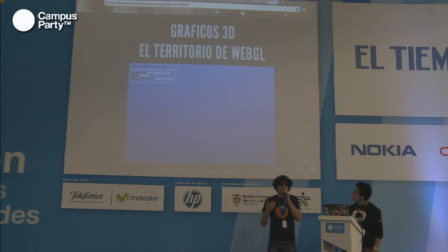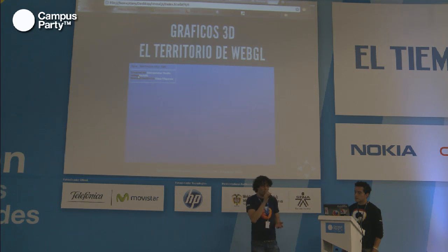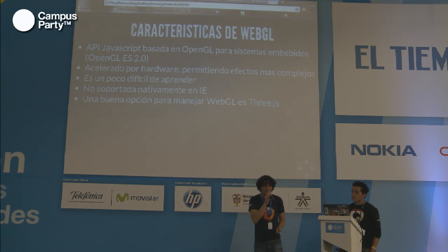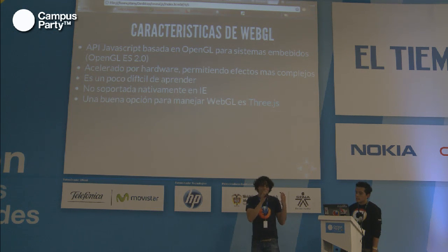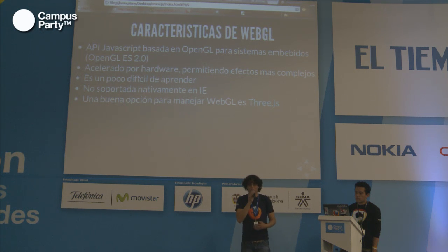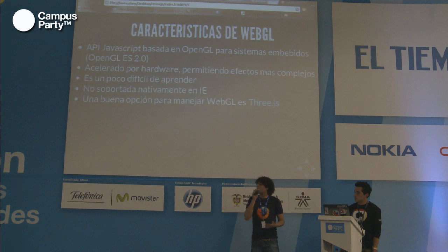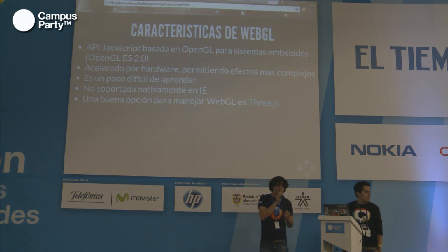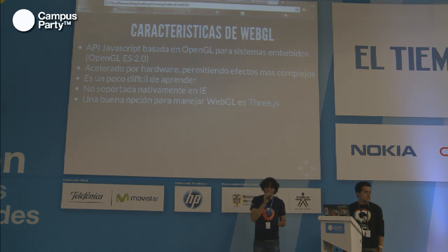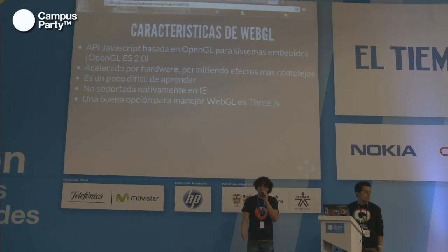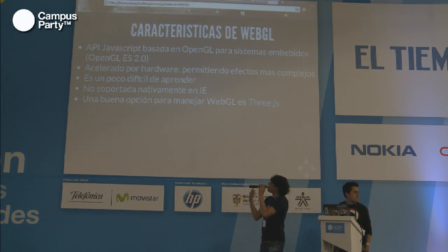Pasamos de los gráficos 2D a algo más avanzado: los gráficos en 3D. Para ello encontramos una tecnología que se llama WebGL. WebGL está basada en OpenGL, una librería que nos permite acceder a los recursos gráficos del sistema para renderizar los gráficos en pantalla y hacer todo tipo de operaciones gráficas. Está basada en una versión ligera de OpenGL llamada OpenGL ES 2.0, diseñada especialmente para sistemas embebidos, como celulares y dispositivos móviles.